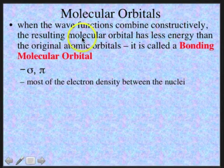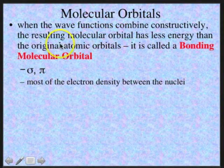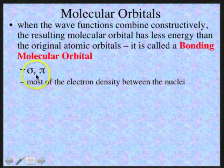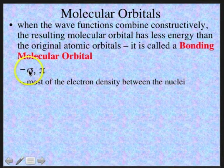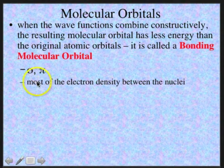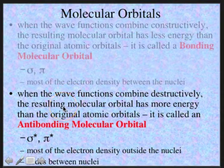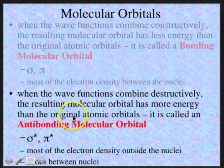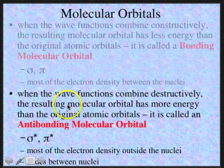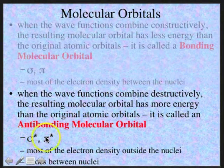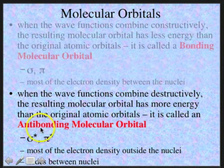Because orbitals are wave functions, when you combine them, they can combine either constructively or destructively. When wave functions combine constructively, the resulting molecular orbital has less energy than the original atomic orbitals, and it's called a bonding molecular orbital. There are two types: a sigma bonding orbital and a pi bonding orbital, where most of the electron density is between the nuclei. When wave functions combine destructively, the resulting molecular orbital has more energy than the original atomic orbitals and is called an anti-bonding molecular orbital. The designation for the two types is sigma star and pi star.